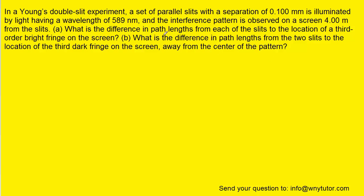For part A, in order to find the difference in path lengths from each of the slits to the location of the third order bright fringe on the screen, we're going to have to consider the formula for the path difference involved in constructive interference. Now we know it's constructive interference because the question notes that we have a bright fringe.